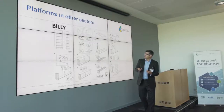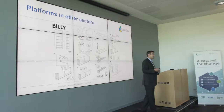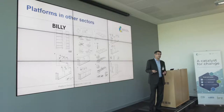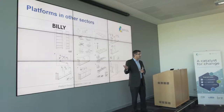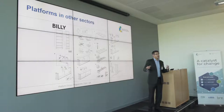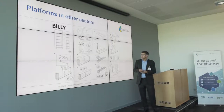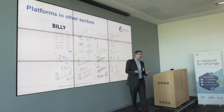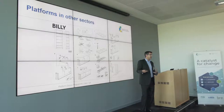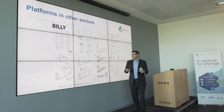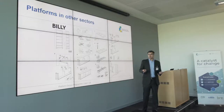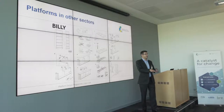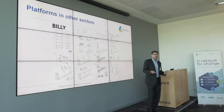Prior to IKEA, if you wanted a wardrobe you bought an expensive thing or found a craftsman. After IKEA, everyone is effectively a joiner. The analogy goes deeper too: when you go to IKEA you don't buy a fully manufactured wardrobe and try to get it home on the roof of your car. You buy things as a kit of parts — that's logistically efficient. And when you get home, you don't make the wardrobe on the drive and then try to get it around the corner, up the stairs, and into the bedroom.